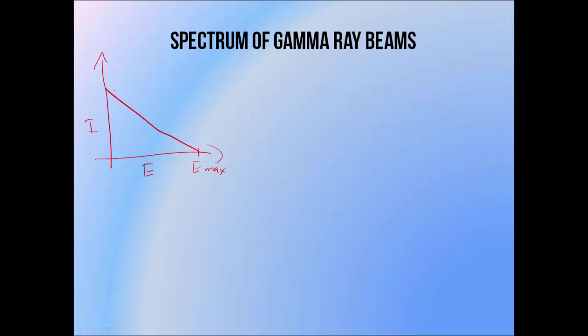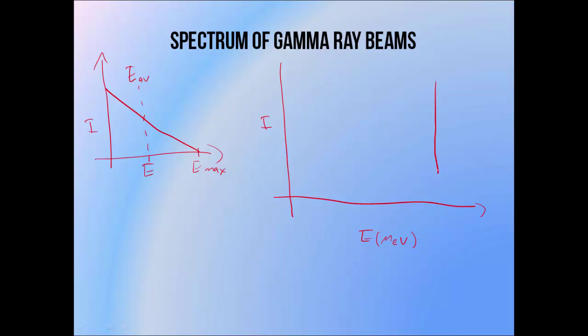Photon beams produced via the Bremsstrahlung interaction have an energy spectrum that increases linearly as the energy decreases, so they're mostly composed of low-energy photons. This means the average energy of a beam tends to be a lot lower than its maximum energy. The spectrum of beams generated via gamma ray emission tends to look very different. Gamma sources emit photons at very specific energies — take cobalt-60, for example, which emits photons at energies of 1.33 and 1.17 MeV. This pure emission spectrum means that if a beam could exit a teletherapy machine without hitting anything, it would have a quite high average energy because it lacks that low-energy Bremsstrahlung component.